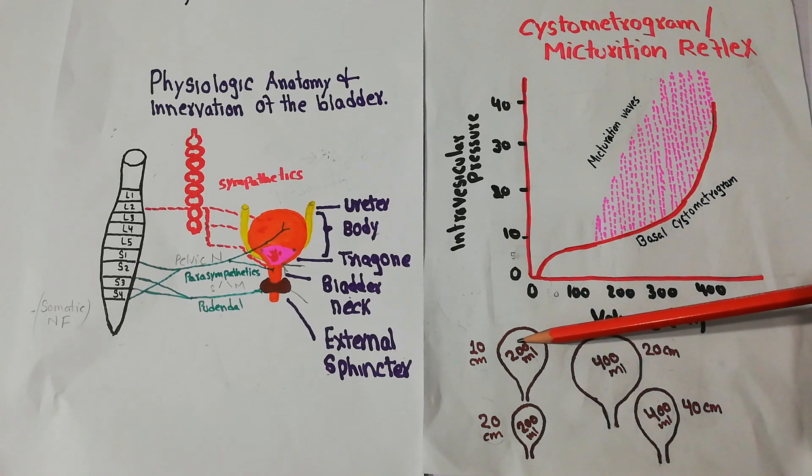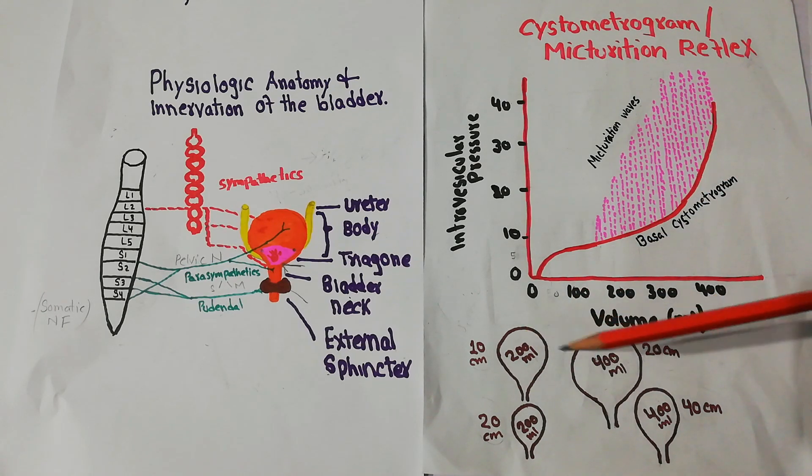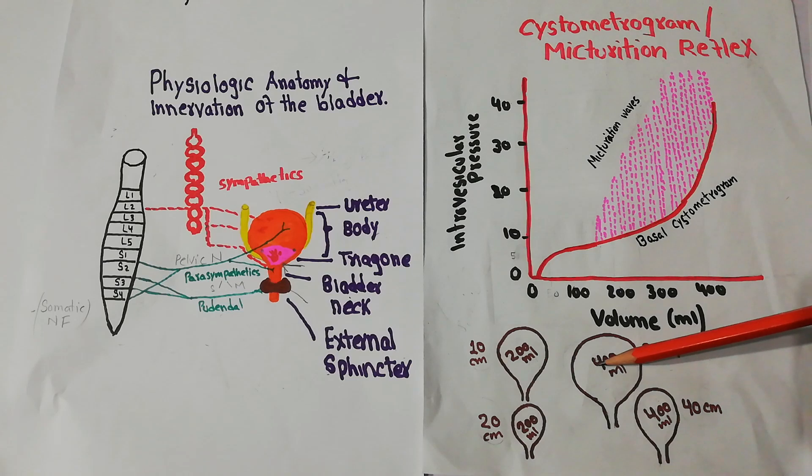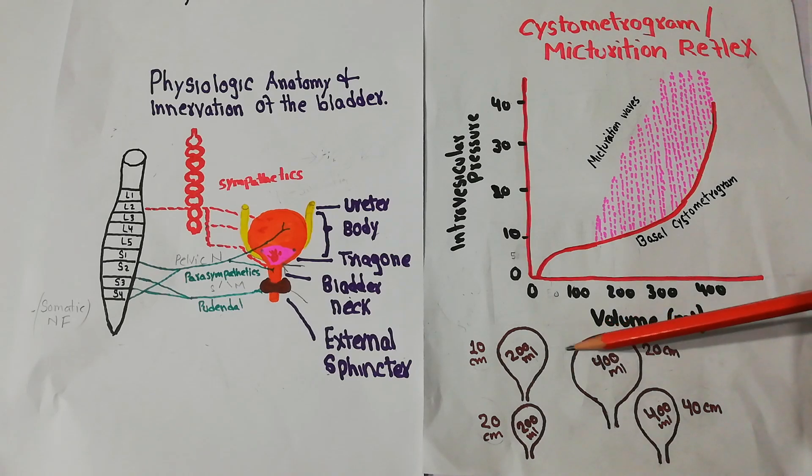For example, in one bladder there is 200 ml of urine and in another bladder there is 400 ml of urine, so the pressure in the second bladder will be higher.